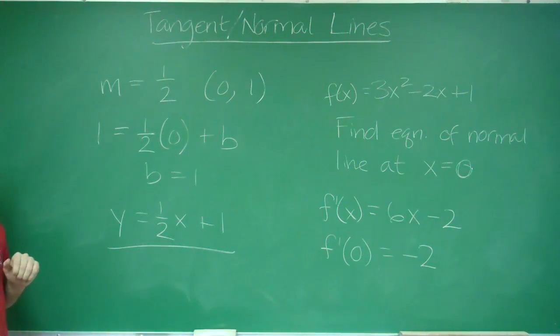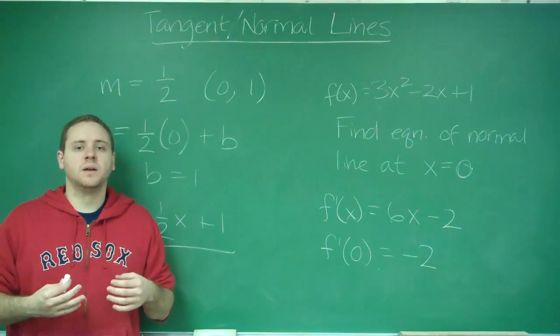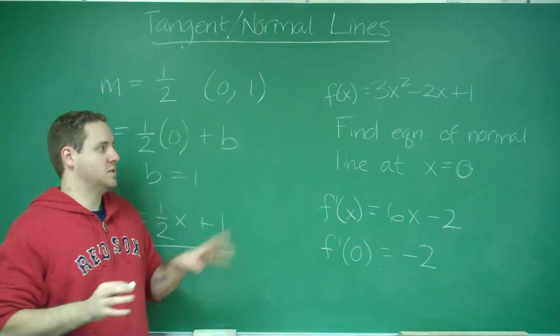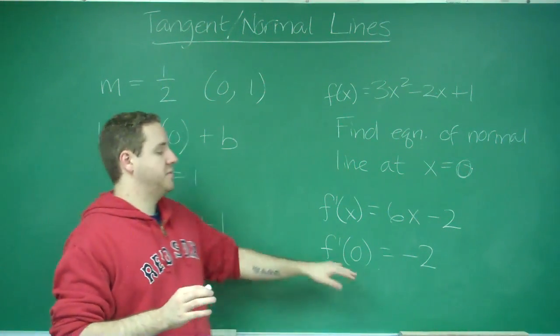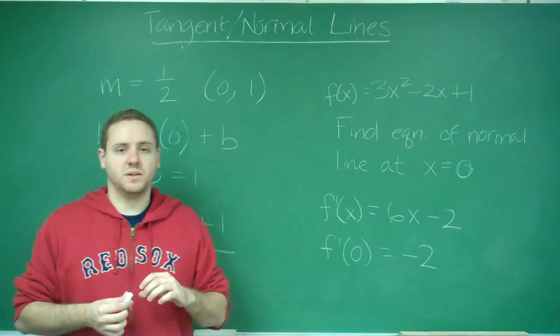The tangent and normal lines are a very closely related topic, but remember that the derivative always gives you the slope only of the tangent line. So if you're asked for the normal line, you're going to have to do the inverse reciprocal of that slope, and then find the equation of the line.